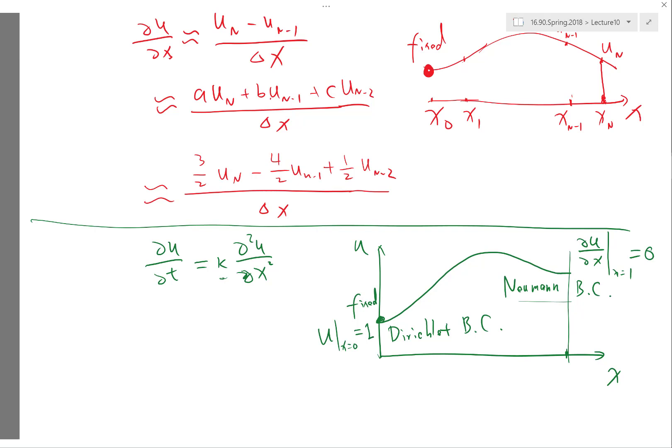Where you actually know how much heat transfer actually goes into the domain at that surface. So here, du dx would not be 0, but be a fixed value you compute from the, for example, radiative heat transfer.